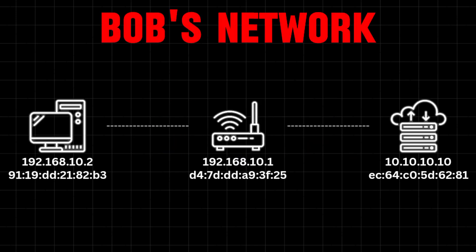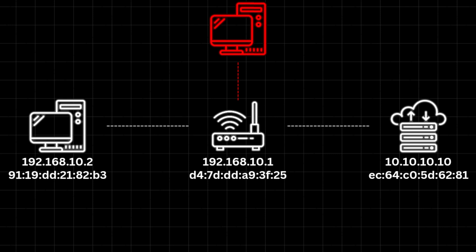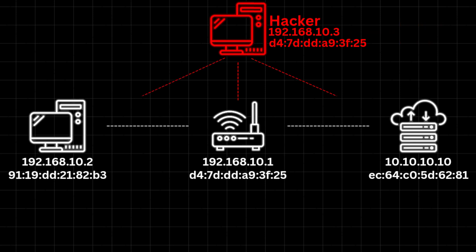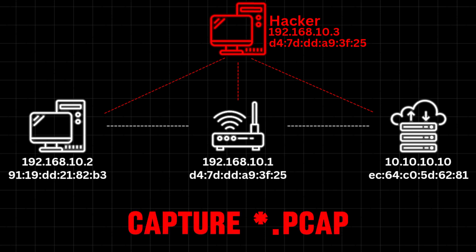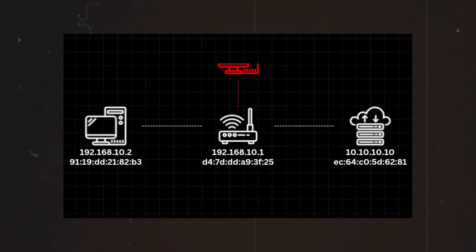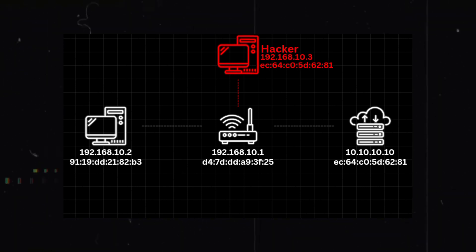This concept of spoofing can be exploited by hackers to perform a man-in-the-middle attack. Revisiting Bob's network — imagine there's another person on the network, a hacker, who can spoof IP addresses and, more importantly, MAC addresses. By spoofing the MAC address of Bob's router, the hacker can position themselves in the middle of the network communication. This means all requests and responses will now flow through the hacker's device instead of the router, allowing the hacker to potentially intercept and see sensitive data traveling on the network.